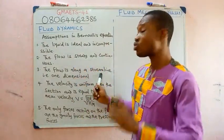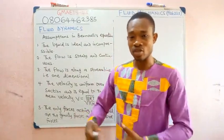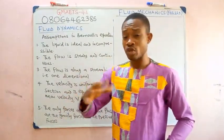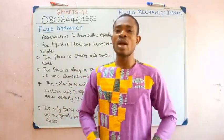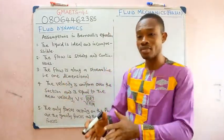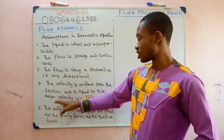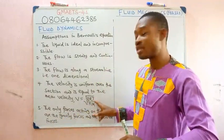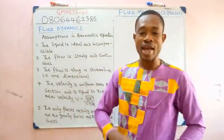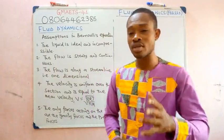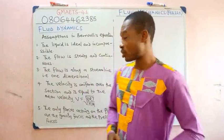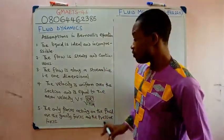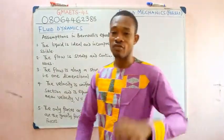Assumption three: the flow should be along a streamline — that is, one-dimensional flow (as opposed to two-dimensional or three-dimensional flow). Assumption four: the velocity is uniform over the section and equal to the mean velocity. Assumption five: the forces acting on the fluid element are gravity and pressure forces only.